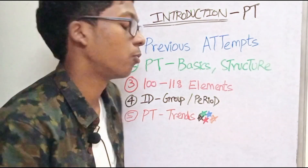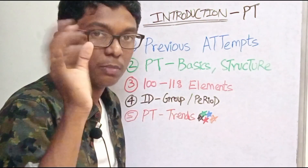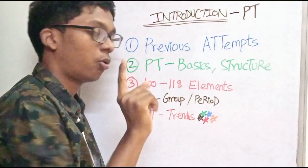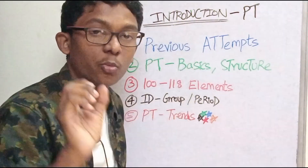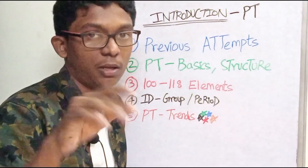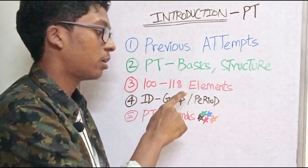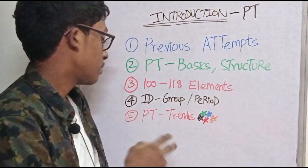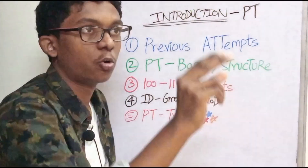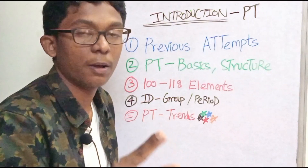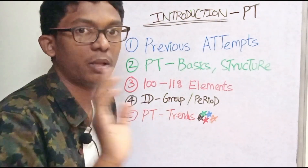Let's go ahead and see the tricks. The third topic is just to memorize the elements — atomic numbers up to 118. You can use names and a super trick. If you learn it, it will be easy. You can use elements from 100 to 118, and then identify the group and period for any given atomic number.